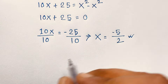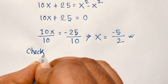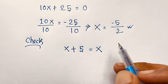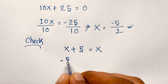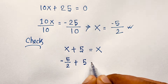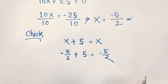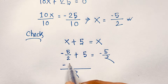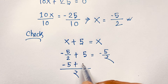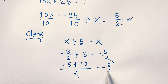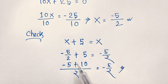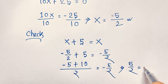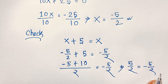Is it right? Let's verify by substituting back into our question x + 5 = x. Replacing x with -5/2: negative 5 over 2 plus 5 should equal negative 5 over 2. The least common denominator is 2, so this becomes (-5 + 10) over 2, which is 5 over 2. But 5/2 is not equal to -5/2, so the left-hand side and right-hand side are not equal.